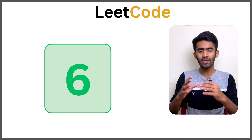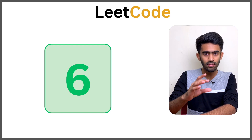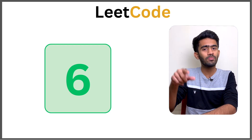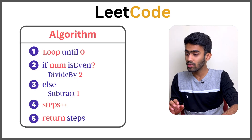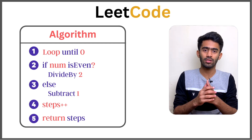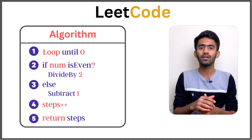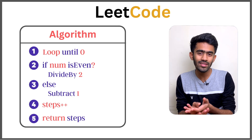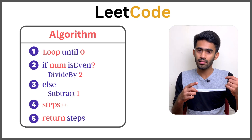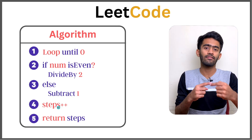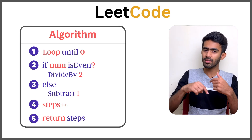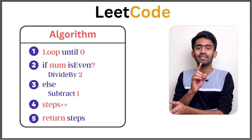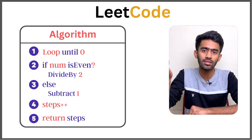It's a very simple loop. We repeat the same process: if the number is even, divide by 2; if odd, subtract 1. Repeat until you reach 0. Don't forget to increment the step count at each iteration. Initialize steps to 0, increment it in every iteration, and when you exit the loop, whatever value is stored in steps is your answer — the number of steps to reduce num to zero.